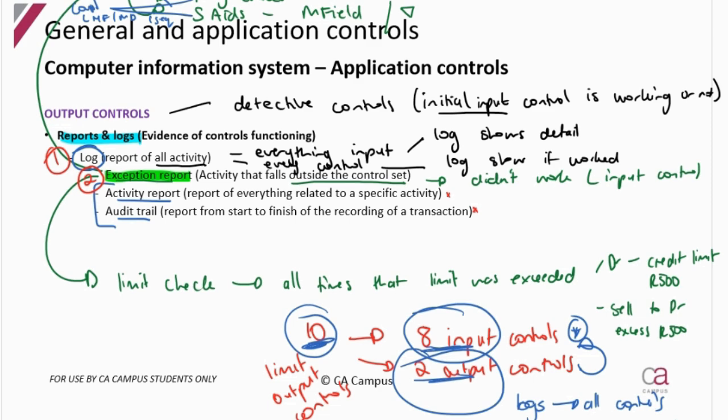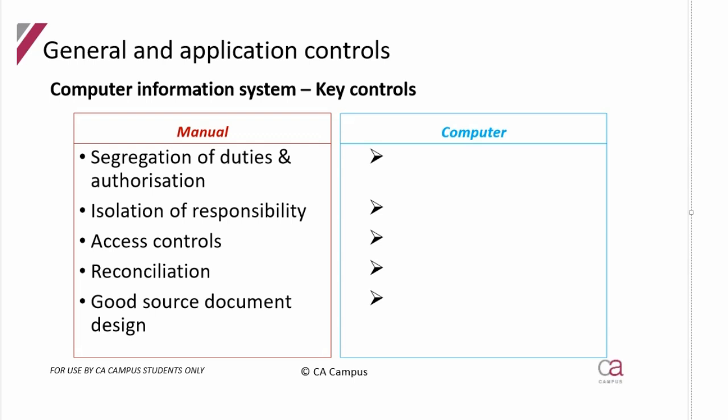As you do questions you'll start to see how to structure output controls, but always include them unless the question limits you to inputs only. If you're not limited, remember how the entire system works: there will be input controls, and then output controls that help you see if those input controls worked or didn't. Getting those output controls will give you more assurance as an auditor about whether you can rely on the controls.